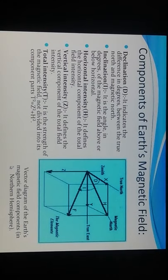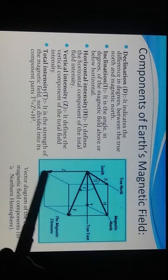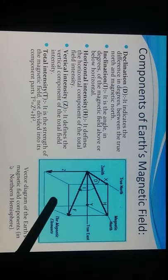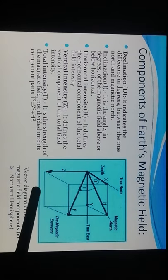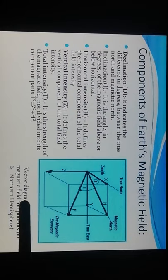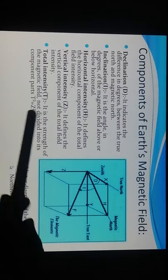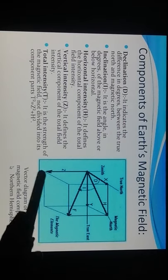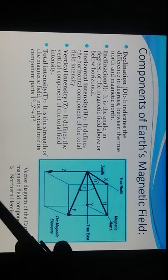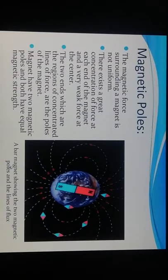H defines the horizontal components of the total field intensity. Vertical intensity Z defines the vertical components of the total field intensity. T denotes the total intensity — the strength of the magnetic field not divided into its component parts. The formula is: T² = Z² + H², and this is the actual formula of total intensity.